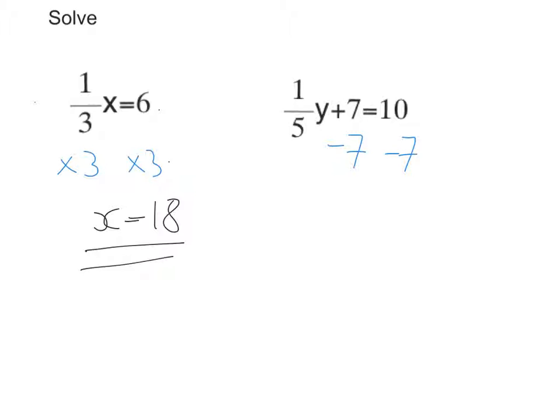So if I do that, I'm left with a fifth y plus 7 minus 7, where they cancel, that makes 0 on the left-hand side. And on the right-hand side, 10 take away 7 is 3.